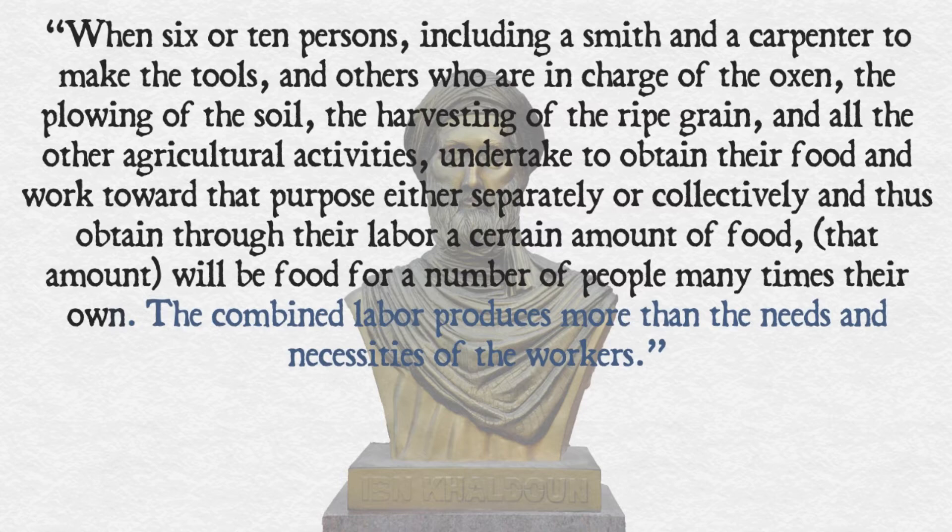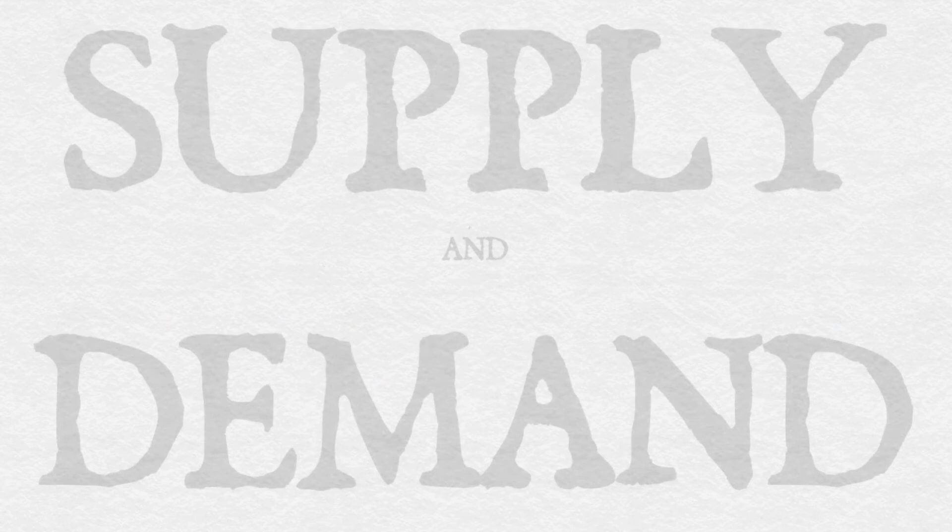Talking about supply and demand, Khaldun said that when goods are few and rare, their prices go up. On the other hand, when the country is near and the roads safe for travelling, there will be many to transport the goods. Thus, they will be found in large quantities and the prices go down.